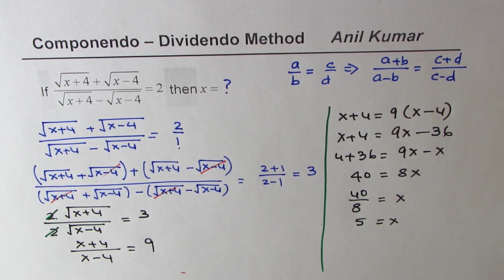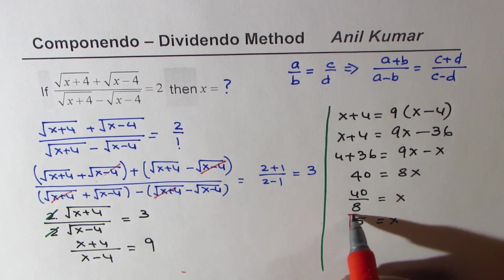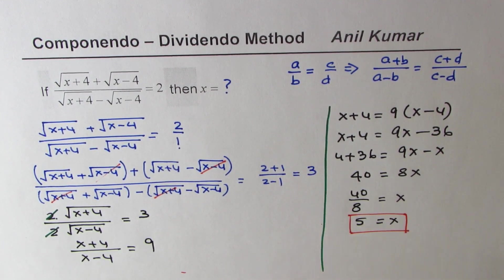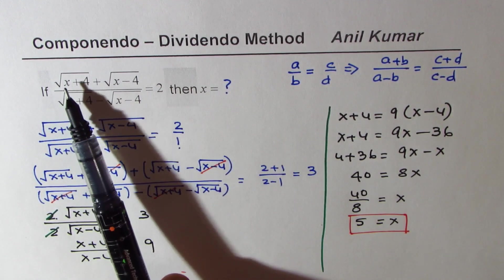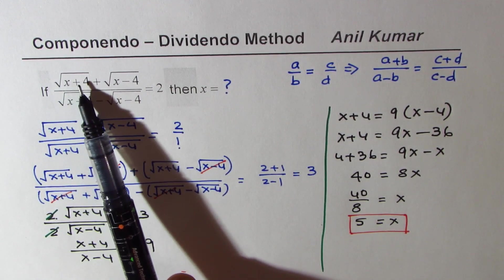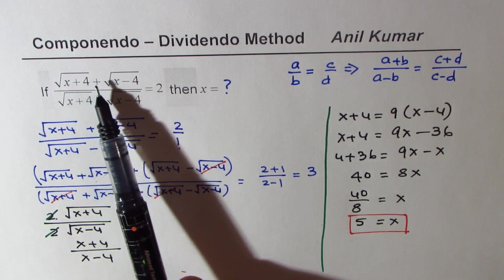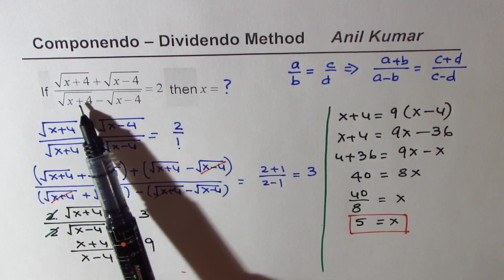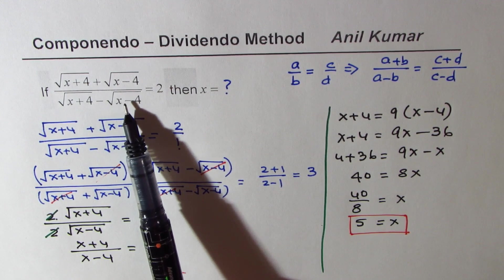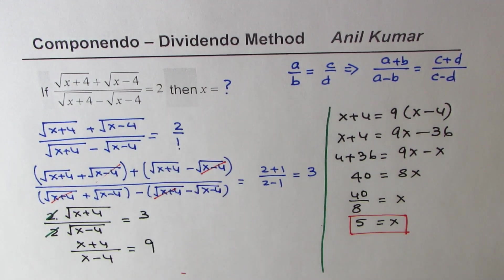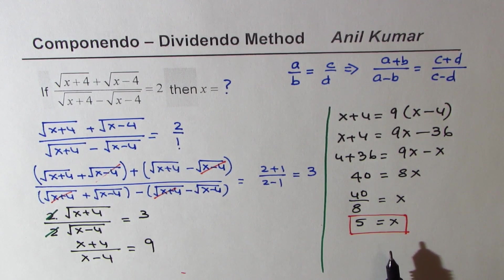That is how we can easily solve such questions. We can verify: substituting x equals 5, we get square root of 9 equals 3 and square root of 1 equals 1. So 3 plus 1 is 4 and 3 minus 1 is 2, and 4 divided by 2 is 2, which confirms our answer. That is how we get this result.